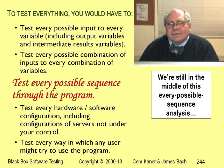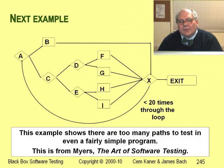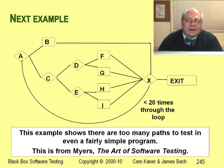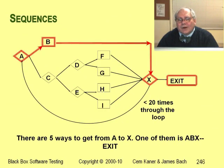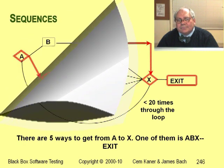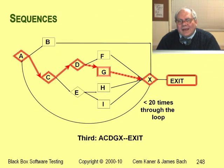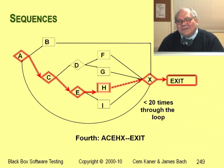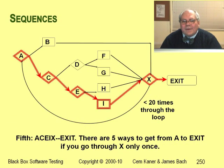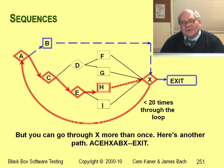Now let's look at our next example for testing sequences. This is a famous example from Glenn Meyer's book. We start the program at A, and all the branches lead to X. At X, we either loop back to A or exit. If we reach X for the 20th time, we always exit. One path goes from A to B to X. Another goes from A to C to D to F to X. Then A to C to D to G to X, A to C to E to H to X, or A to C to E to I to X. So there are five ways to get from A to X, giving five paths if we go through the loop just once.